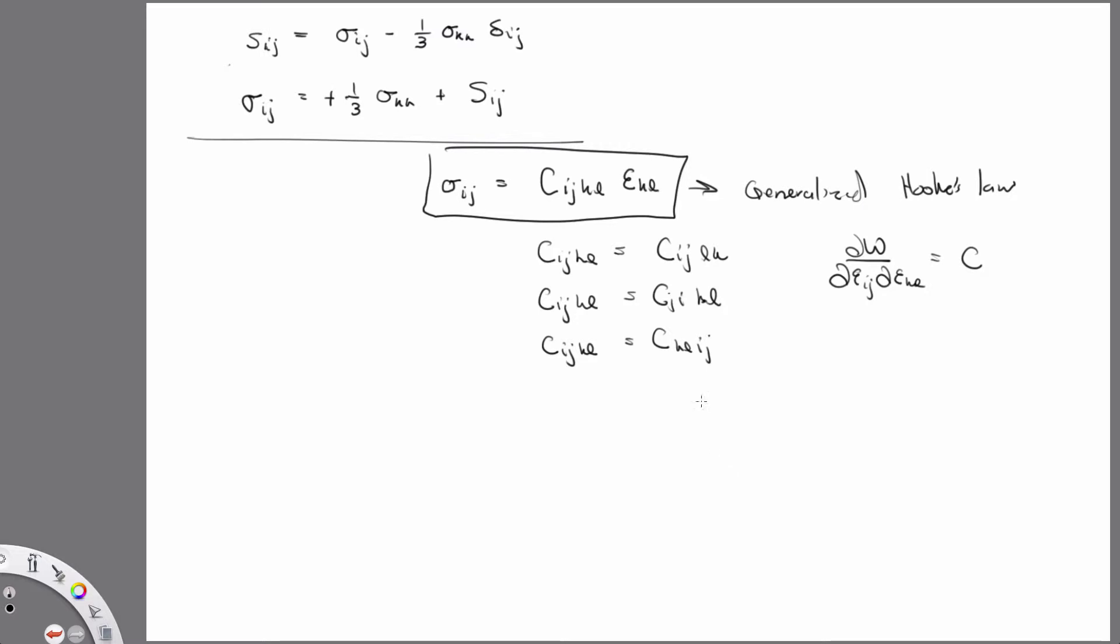And so, given all of those things, the 81 components of Cijkl, and everybody know why there's 81 components? Because i, j, k, and l each go from one to three, right? So three times three times three times three is 81. But given these symmetries, that takes it down to 21 unique components.